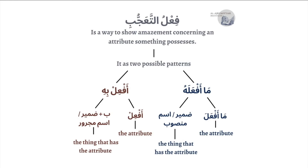For example, 'how beautiful is the garden,' and so on and so forth. So فنة عجب is specifically a way to show amazement concerning an attribute that something or someone possesses. And there are two possible patterns to do this in the Arabic language.